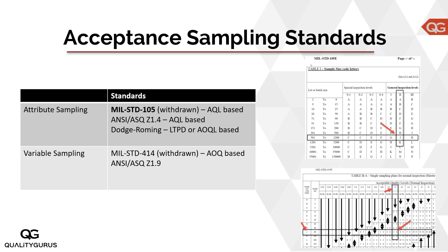In variable sampling, I would take the actual measurement of those balls, find out the mean, and based on that mean judge the mean weight of the whole population. Most of the examples in the early phase of these lectures will be related to attribute sampling, so let's keep our focus on attribute sampling.